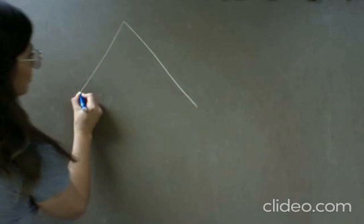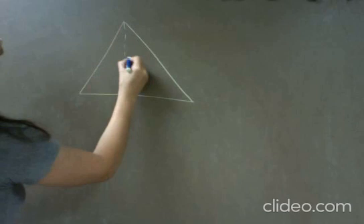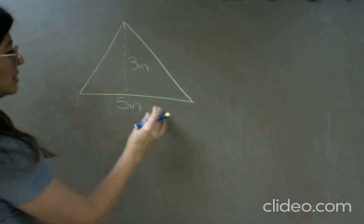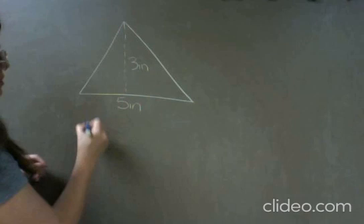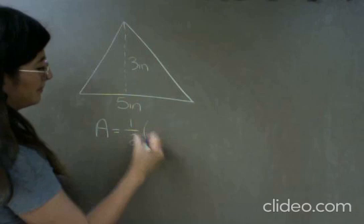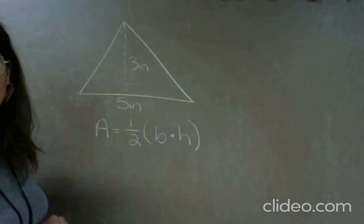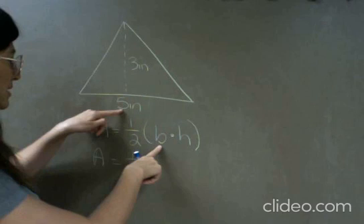Let's find the area of a triangle. If we have a triangle that looks like this, and my height is three inches and my base is five inches, then we're looking for the area. Area equals half base times height — area equals half, your base is five inches.